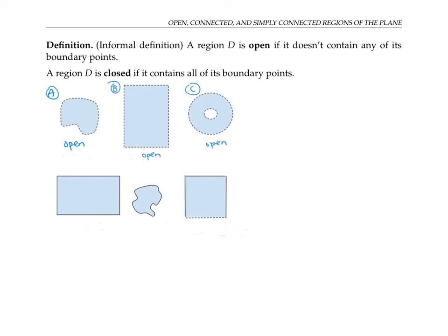The next region, which I'll call D, is not open, because it contains its boundary points. That's what that solid line means — the edge or boundary is contained in the region. In fact, since D contains all of its boundary points, we say that D is closed.